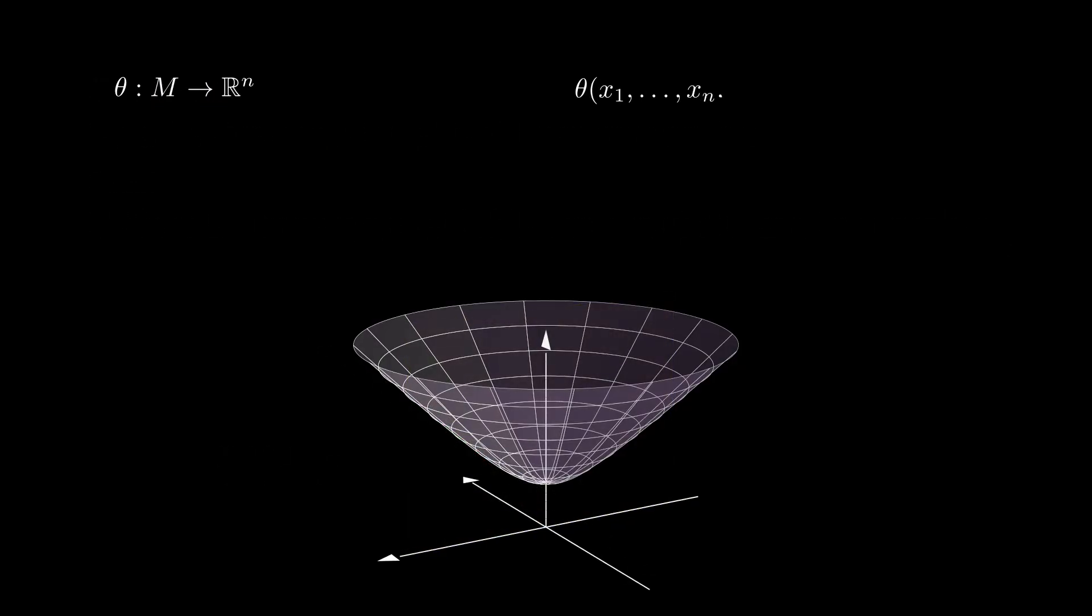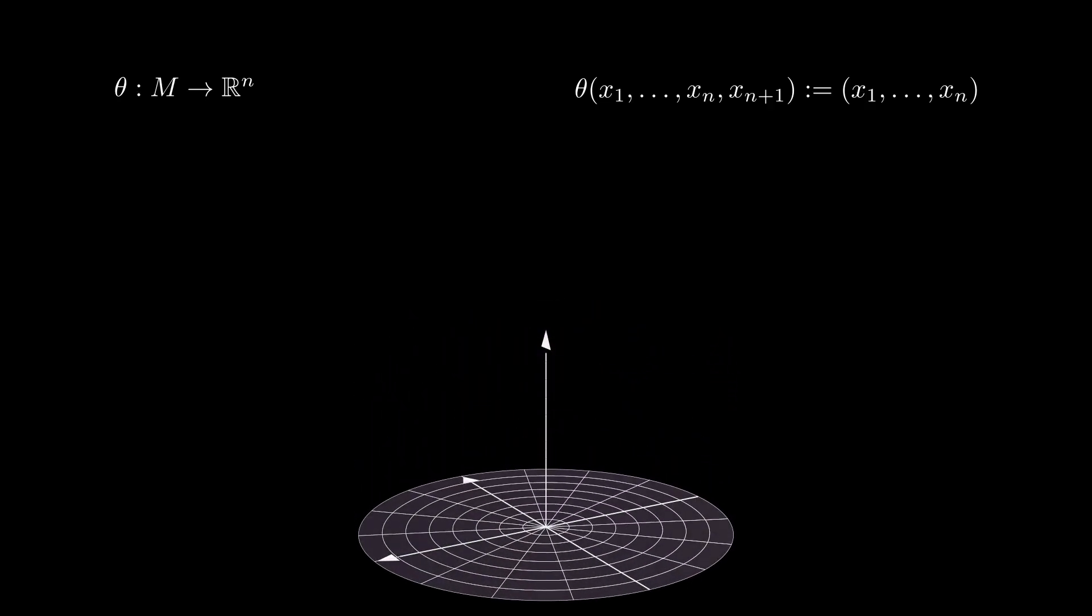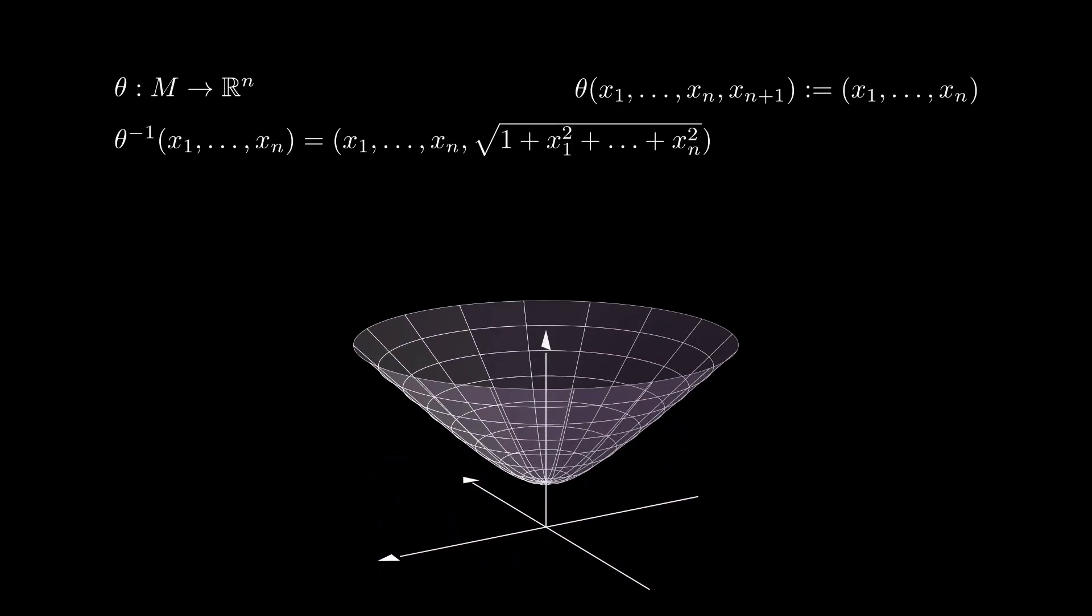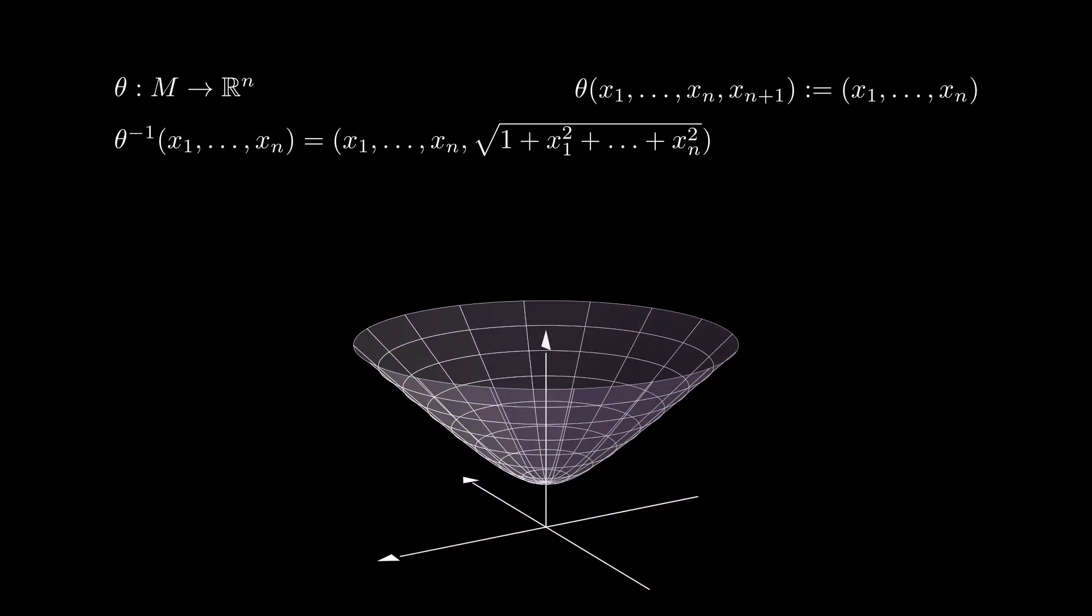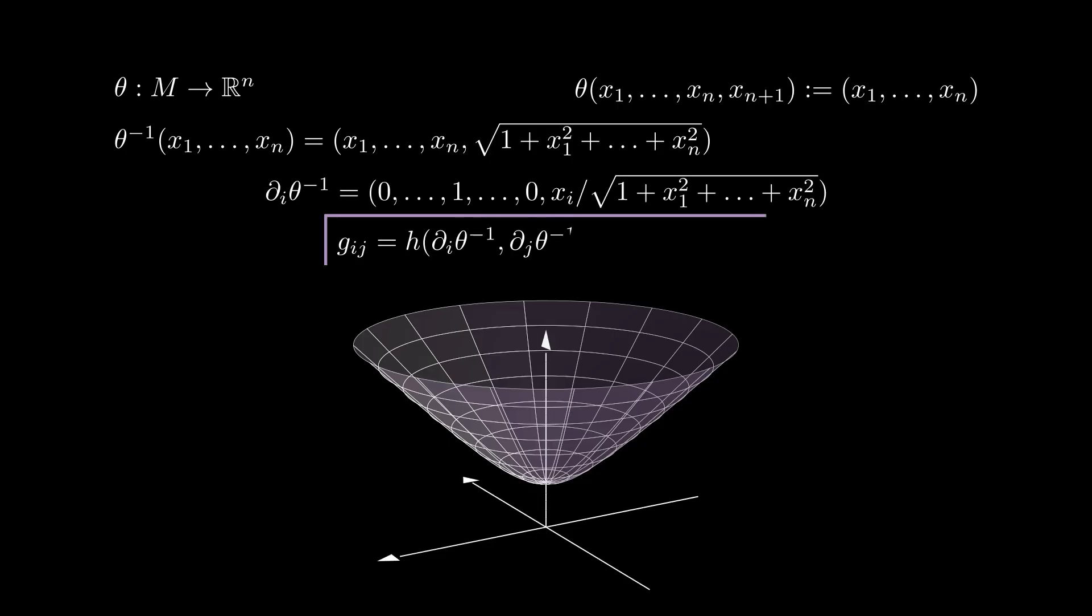To verify the smoothness condition, we can use the chart that projects vertically the entire hyperboloid onto the plane R^n. The inverse of this map has this formula because the hyperboloid is the graph of the function square root of 1 plus the norm of x squared. Taking derivatives and computing the product between them with respect to h, we get a formula for the metric coefficients with respect to this chart.